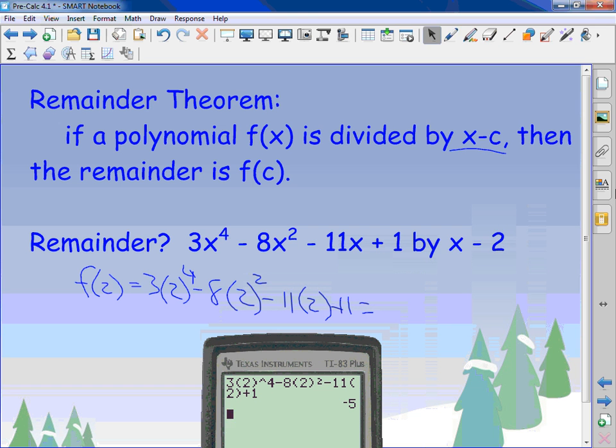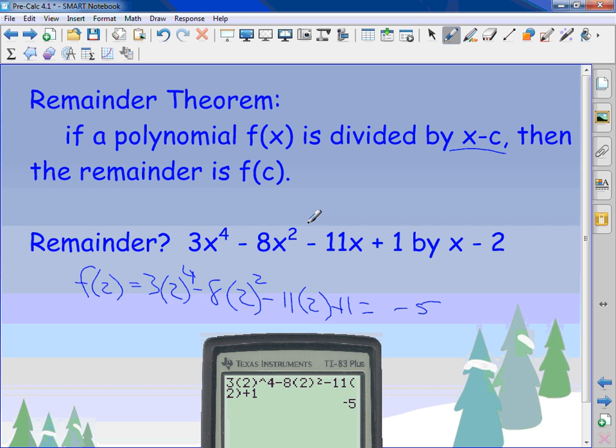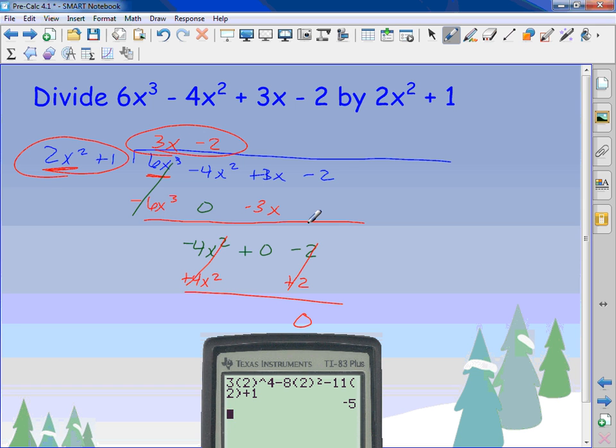So the remainder is negative five. Does this problem look familiar? It's that first example we did with synthetic. What was our remainder? Negative five. So right off the bat, I know if something's a factor or not. If I go back to this one, we had a zero remainder, right? Never mind, it's not x. This one didn't. None of ours we did in class yesterday had them. That's right.